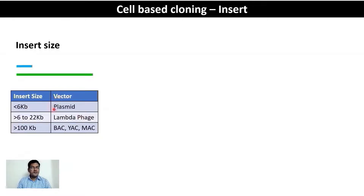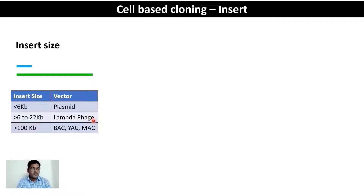If the insert size is less than 6 kilobases, plasmids are the best vector for amplification and/or expression. If it is between 6 to 22 kilobases, lambda phage is the next vector series. If the insert size is very large — greater than 100 kilobases — you need to use artificial chromosomes, including bacterial artificial chromosomes (BACs), yeast artificial chromosomes (YACs), and mammalian artificial chromosomes.